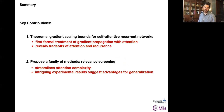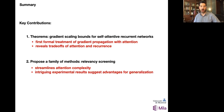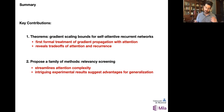In summary, I'd like to outline the key contributions to the field of self-attentive systems that we've made. First, we've provided theorems that have been elusive to this field — development has been mainly based on heuristics, but now we have some scaling properties in specific cases. To the best of my knowledge, this is the first formal treatment of gradient propagation in the presence of attention in recurrent networks, and these reveal trade-offs of attention and recurrence. We use these to propose a family of relevancy screening methods that streamline attention complexity and inform the trade-off between the two.